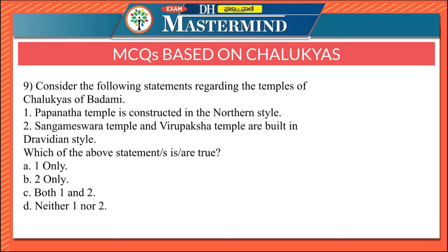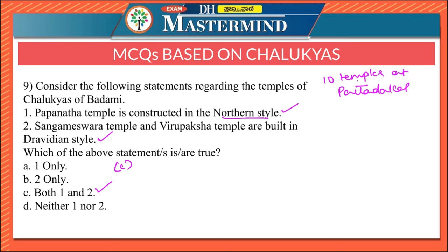The ninth question: the Papanatha temple is constructed in the northern style, while the Sangameshwara temple and Virupaksha temple are built in the Dravidian style. Both statements are correct, Option C. There are ten temples at Pattadakal belonging to the Chalukyas of Badami — four in the northern style and six in the Dravidian style. The Papanatha temple is the most notable in the northern style, while the Sangameshwara and Virupaksha temples are famous for the Dravidian style.